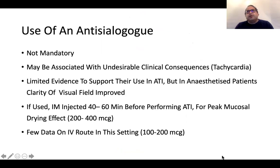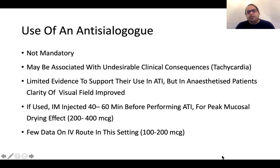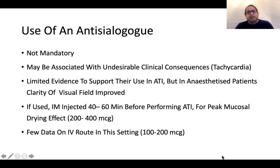When anaesthetising the oropharyngeal airway, we discuss whether to use antisialagogues. It is said that a dry mucosa is important for local anaesthetic to be effective, as saliva will dilute it. Most people use antisialagogues. If you use glycopyrrolate, use 200–400 micrograms IM, given 40–60 minutes before the patient reaches theatre. If using IV, give 100–200 micrograms, but be aware it will cause tachycardia regardless.